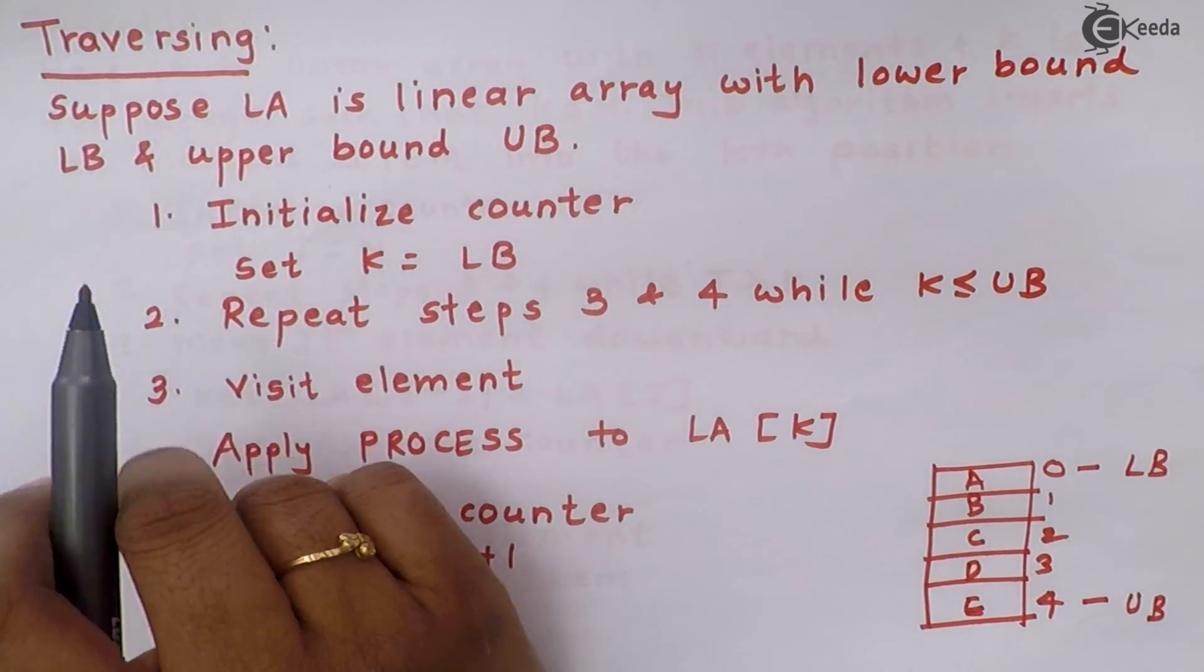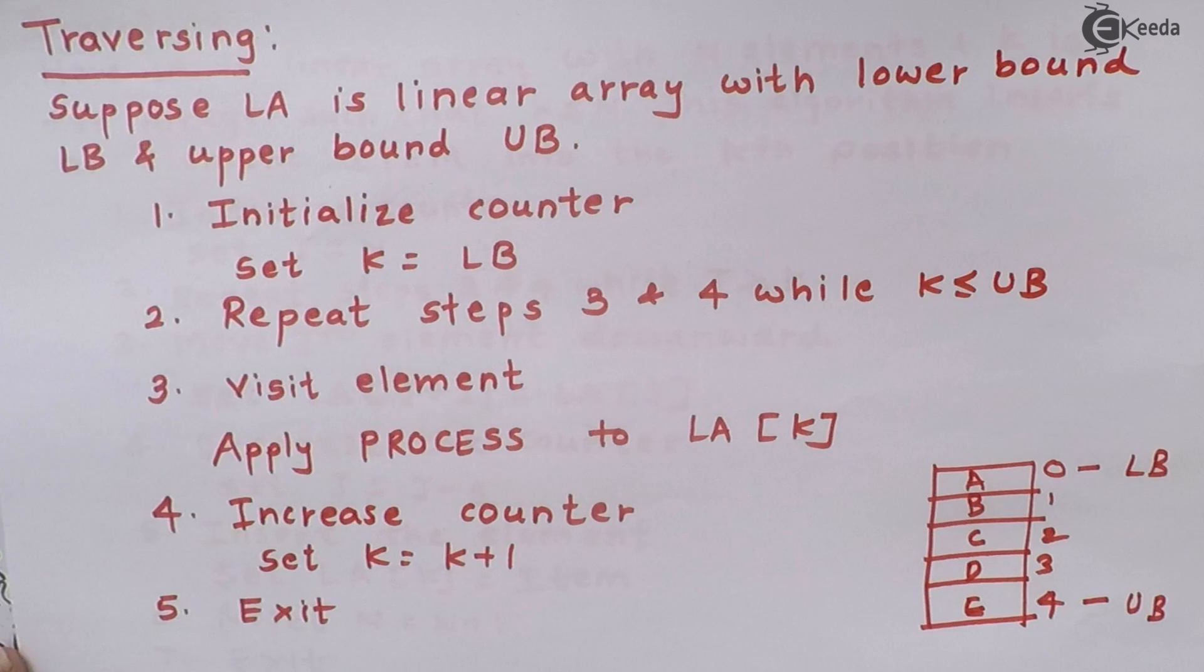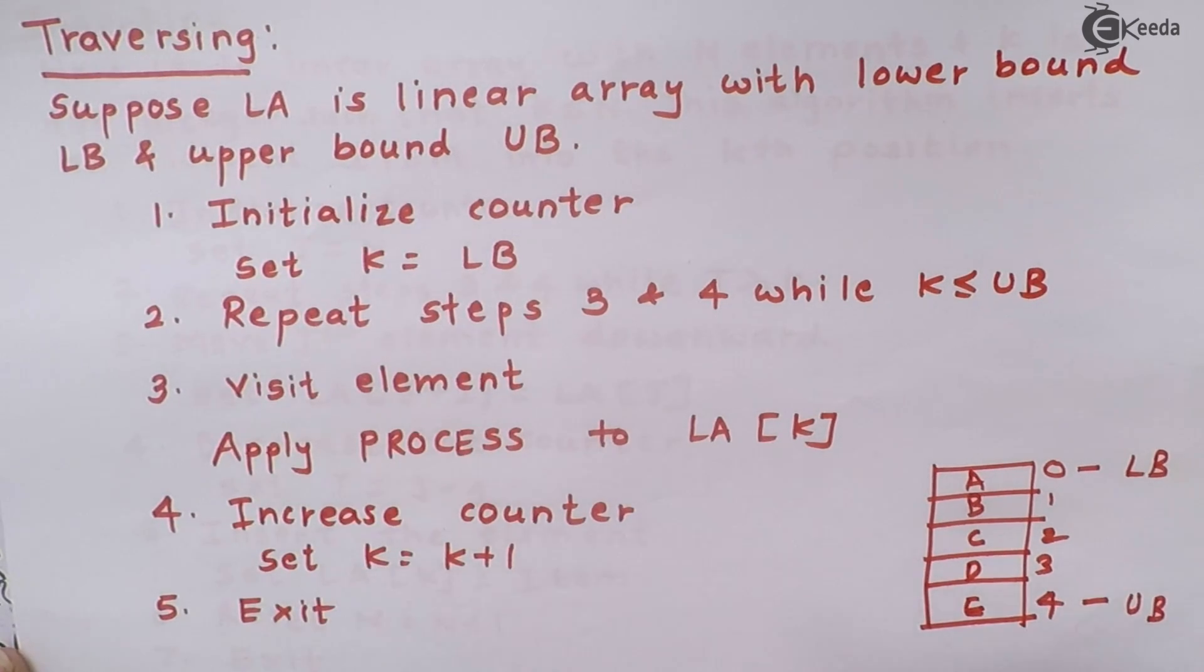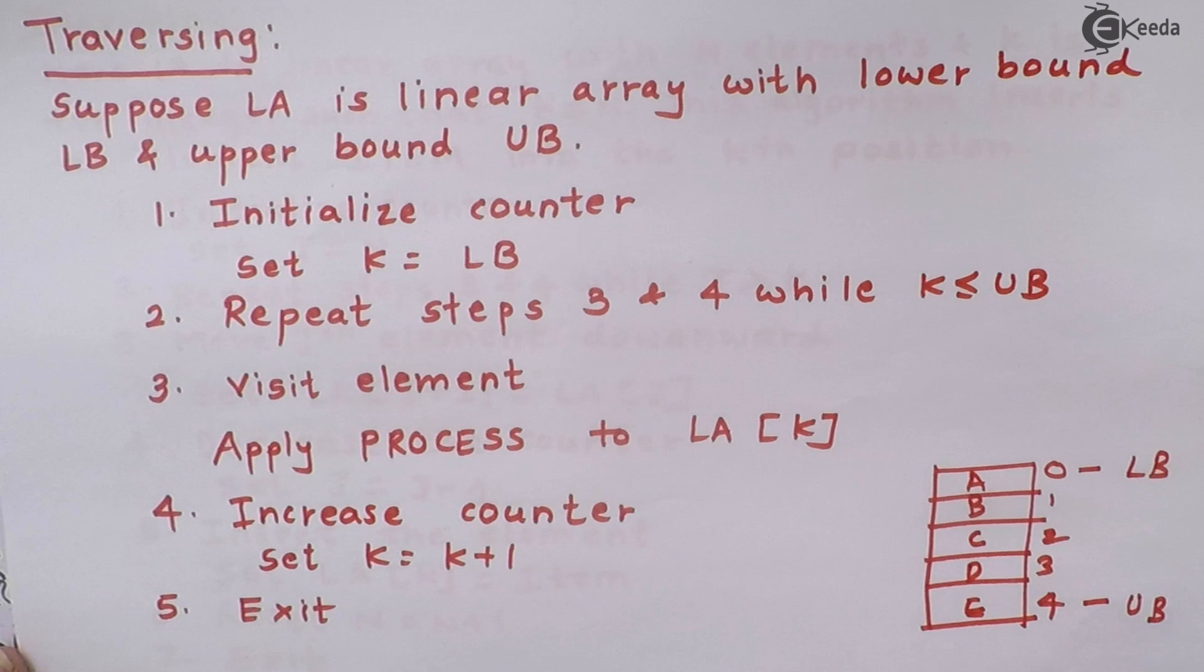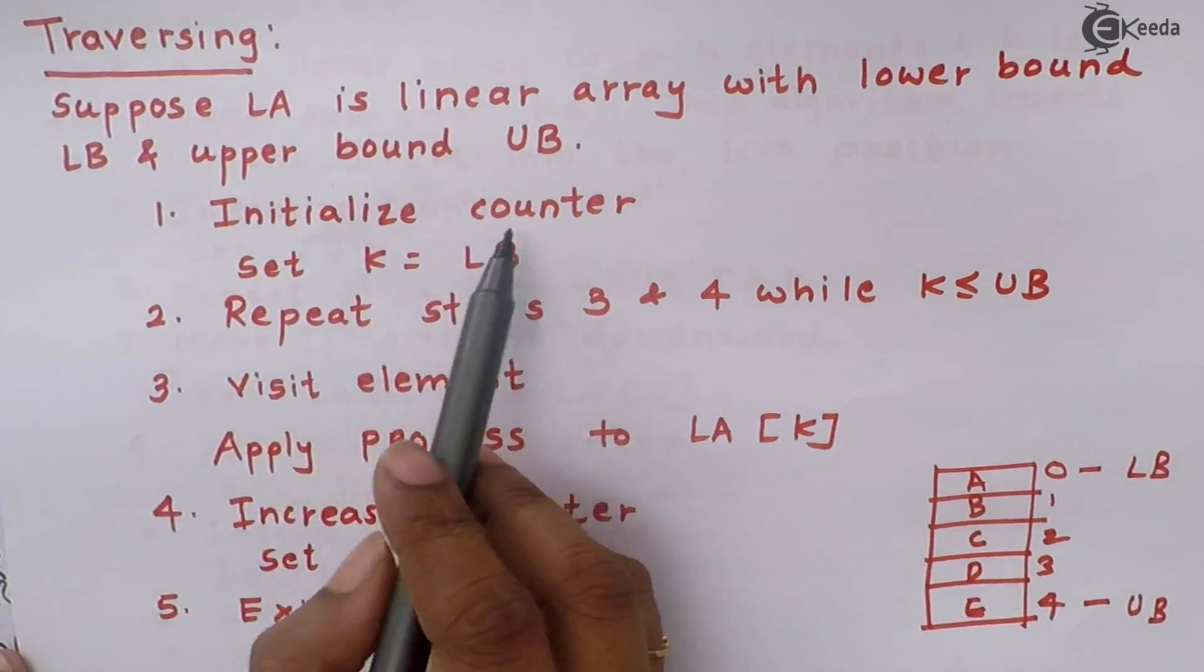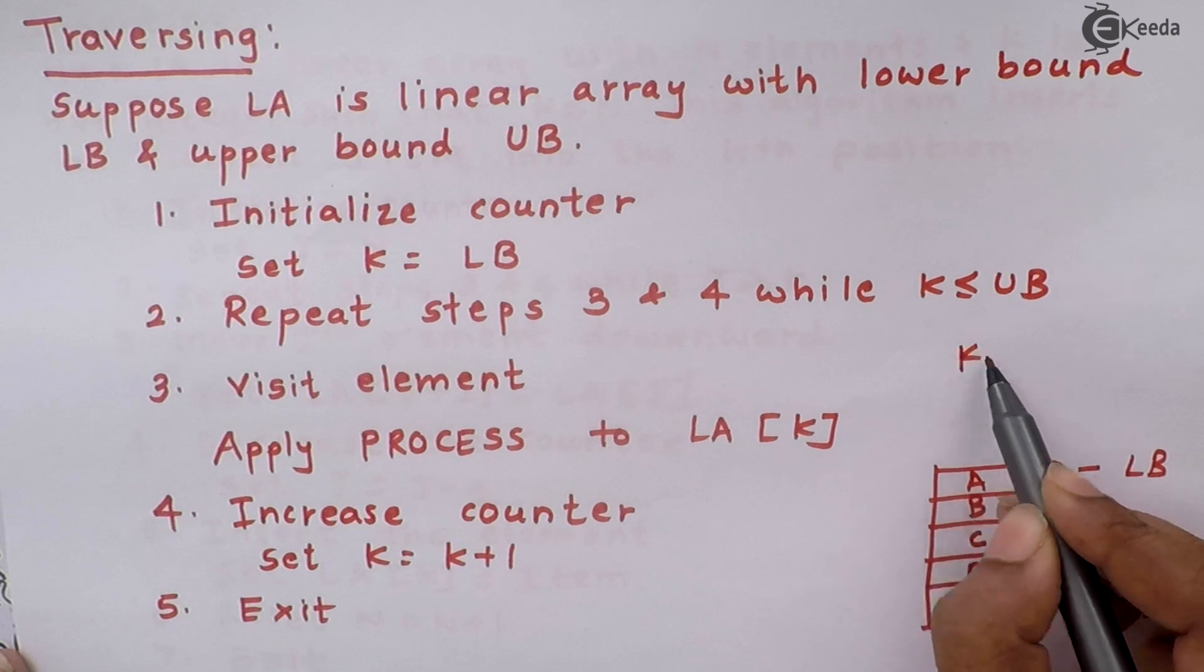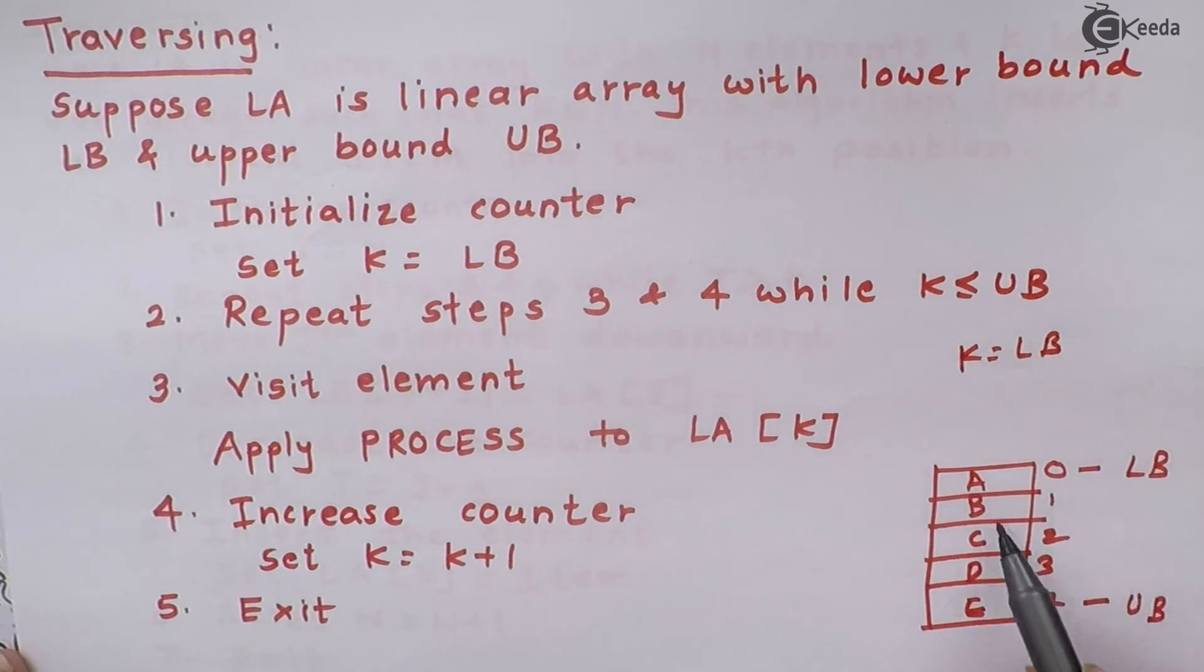Now I will be performing traversing operation on this. What is meant by traversing? Traversing is accessing elements of an array only once so that you can proceed. You will access the element either to read the element or to write into the element. So how to do that? Initialize a counter. Set k is equal to LB. So my counter is LB and here LB means lower bound is nothing but 0. So my k's value is going to be 0.